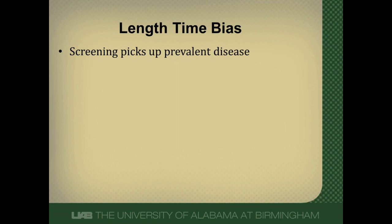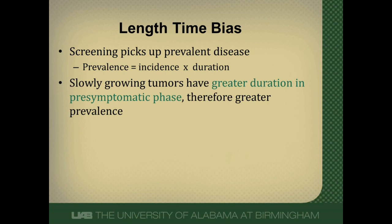Screening tends to pick up prevalent disease, and prevalence is a function of incidence, or the rate of development of new disease, and duration of that disease. So the way you increase prevalence of something is you develop a lot of it, or it lasts a long time, or both. Slowly growing tumors have a greater duration of the pre-symptomatic phase, and thus have a greater prevalence because duration is a component of prevalence.